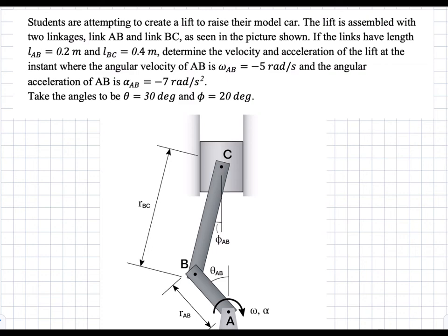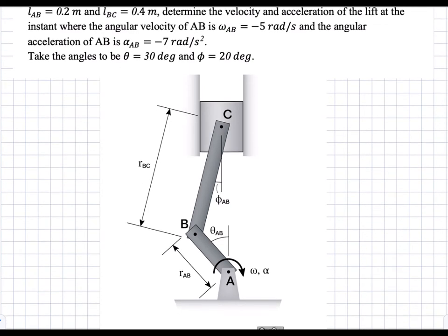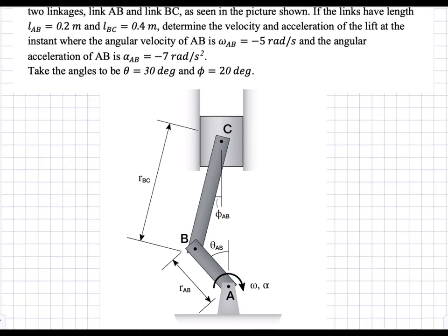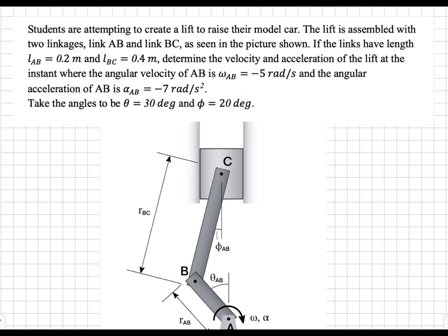In this problem, we have a lift at point C that can only move vertically, attached to two arms: arm AB and arm BC. We're given the angular acceleration and angular velocity of link AB, and we're given the angles with respect to the vertical of both linkages, link AB and link BC. We're asked to find the velocity and acceleration of the lift, so point C.